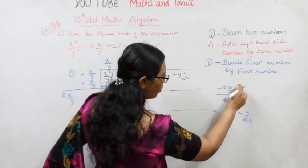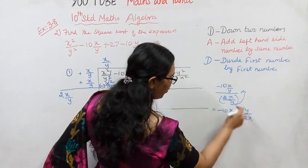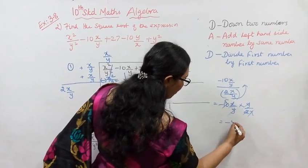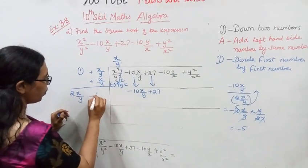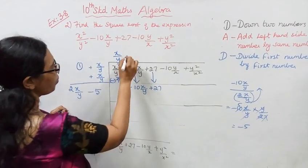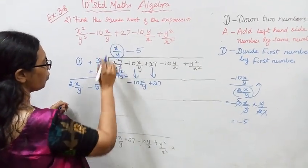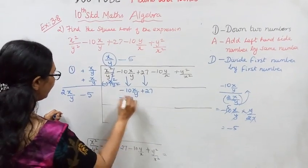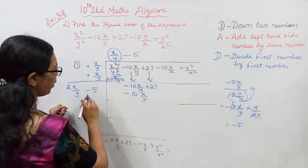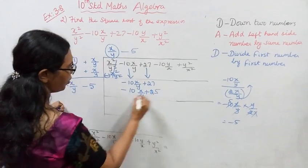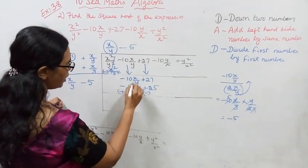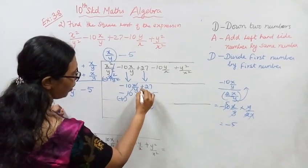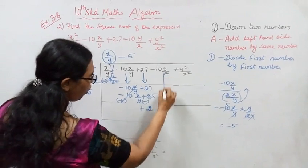Divide by two x by y. Then multiply: first value and second value — multiply. Minus into plus gives minus. 5 twos are 10, so x by y. Minus into minus gives plus. 5 fives are 25. Sign change — cancel. Plus minus subtract: 27 minus 25 equals 2. Greater number sign is plus, so plus 2. Bring down 2 numbers.